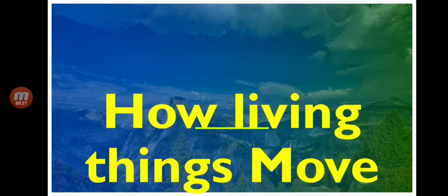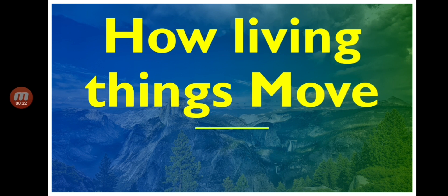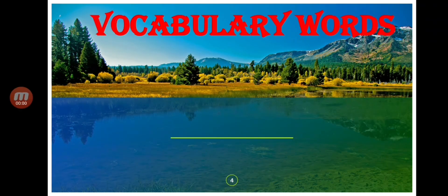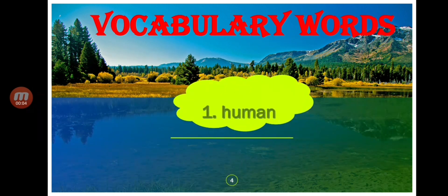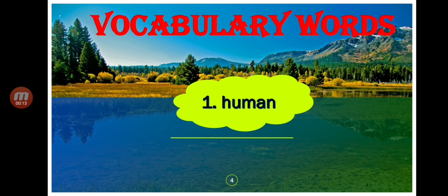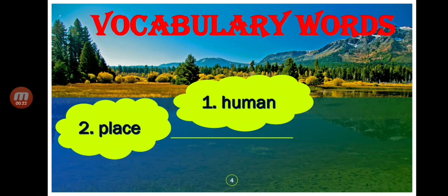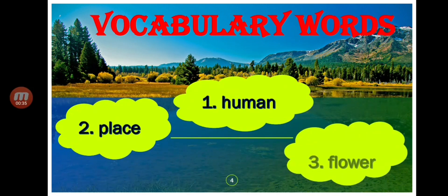Our topic in Science is all about how living things move. I will ask you later about this. Let's read our three vocabulary words first. First word: human — spell it: H-U-M-A-N, human. Very good! Second word: place — spell it: P-L-A-C-E, place. Good! Third word: flower — spell it: F-L-O-W-E-R, flower. Very good!